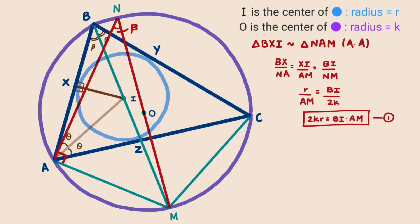Again applying the theorem that angles subtended by the same chord in the same segment are equal, taking common chord MC, angle MBC equals angle MAC. Since angle MBC equals β, angle MAC also equals β. Now looking at angle IBA, the interior angles are θ and β, and since BM is a straight line, angle AIM equals θ plus β by the exterior angle property. We can also see that angle MAI equals θ plus β and angle MIA equals θ plus β. Therefore the respective opposite sides become equal: AM equals IM. Substituting into the first equation, 2K·R = BI × IM.